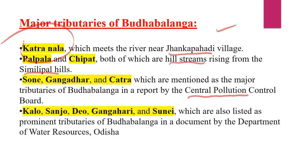Additional tributaries include Kalos, Sanjo, Deo, Gangahari, and Sunai. These are also tributaries of Budha Balang, as mentioned in a document referred to by the Department of Water Resources of Odisha.